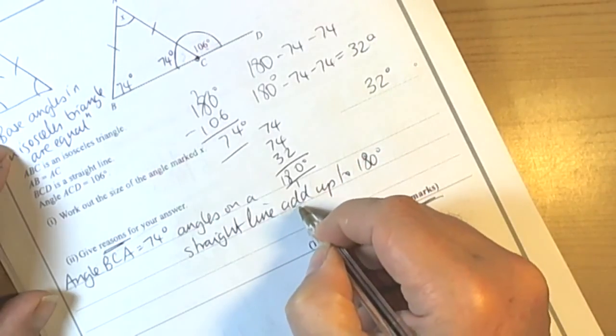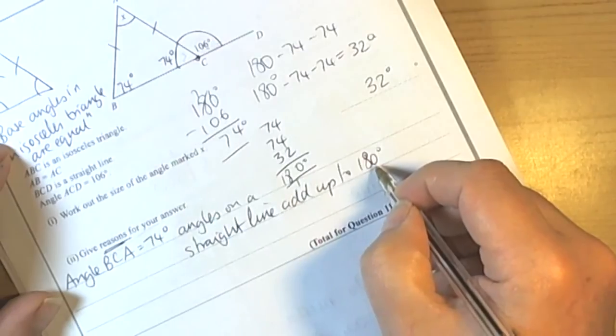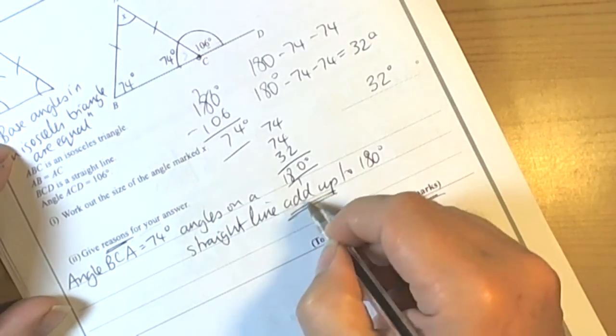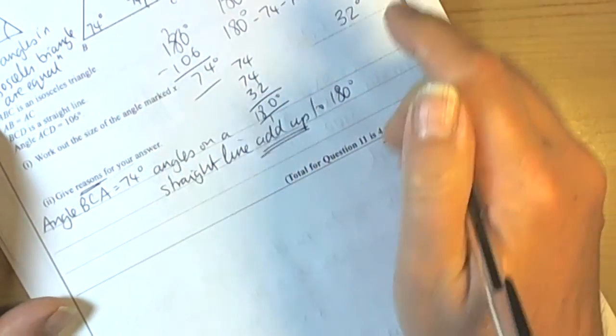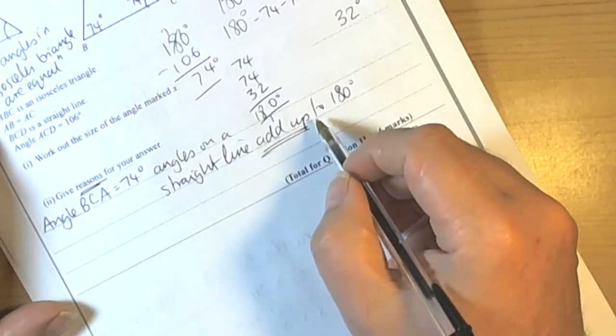Now it's really important that you don't just say angles on a straight line equal 180. You've got to get those words add up to 180. The examiners are looking for key language, so be careful.